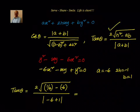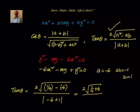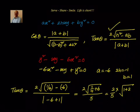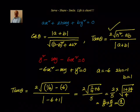Remember that for two straight lines, there is one acute angle and one obtuse angle; we consider only the acute angle by taking the positive value. So tan θ = 2√(h² - ab) / |a + b| = 2√(1/4 - (-6)(1)) / |-6 + 1| = 2√(1/4 + 6) / 5 = (2/5)·√(25/4) = (2/5)·(5/2) = 1. Therefore θ = 45°.